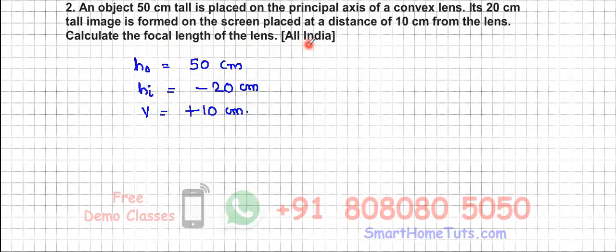Now see here, height of object and height of image is given, so you can use magnification formula and you can get U, that is the object distance. So magnification formula, that is equal to V upon U, that is equal to h_i upon h_O.